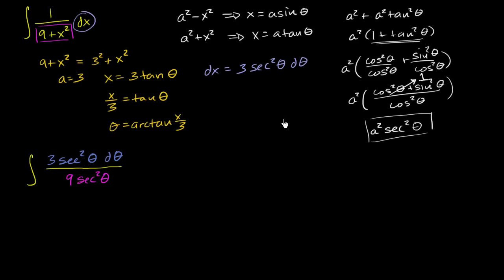And you could essentially go through this logic. You're going to get 9 plus 9 tangent squared theta. Factor out a 9, you get 9 times 1 plus tan squared theta. And so that's going to be 9 times secant squared theta, exactly what we have here.